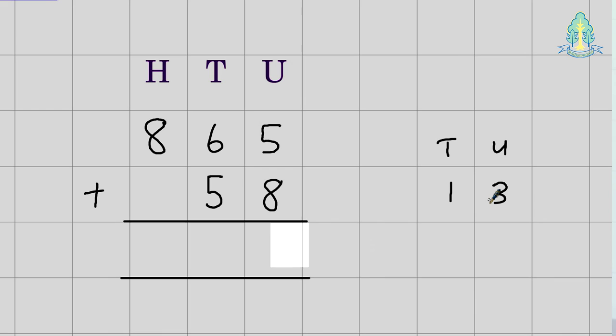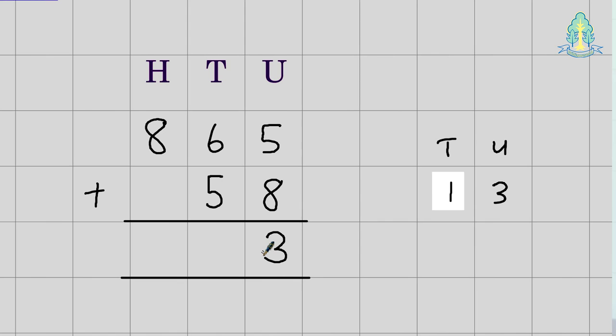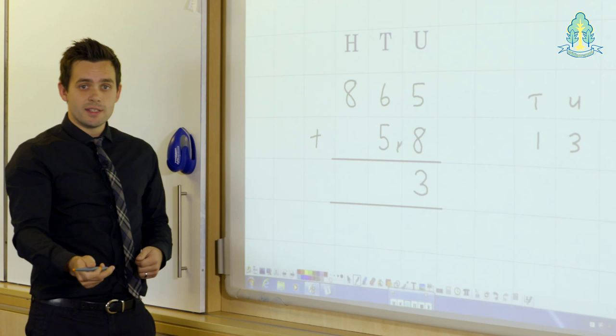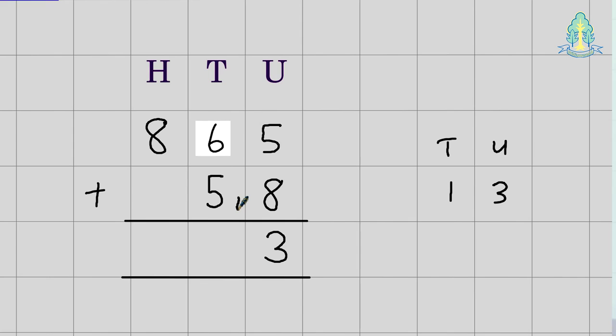So, we place our three units in the units column, and the one is the carrying digit. So, with the one being the carrying digit, ensure that we always put the carrying digit above the line, like so, to represent the one ten, three units, and now we can start to carry out the addition as before.